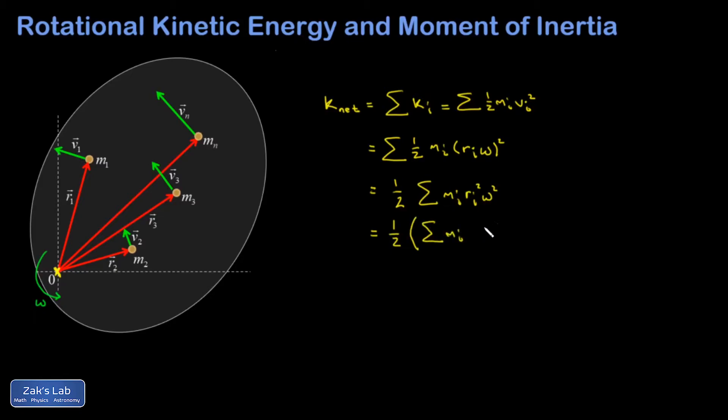And I end up with one half times the sum of m_i r_i squared multiplied by omega squared. This thing in the parentheses gets a special name. It's called the moment of inertia for this rigid body, and we use a capital I for that. And this allows us to rewrite the net kinetic energy of this rigid body in pure rotation as one half I omega squared.